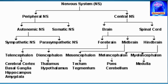The central nervous system comprises the brain and the spinal cord. The autonomic nervous system is further divided into the sympathetic nervous system and the parasympathetic nervous system. The brain is further divided into the forebrain, midbrain, and hindbrain.